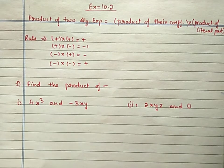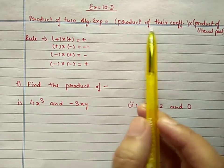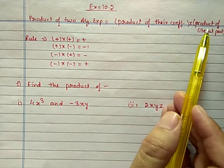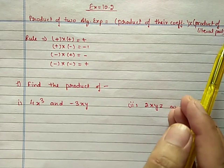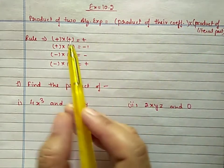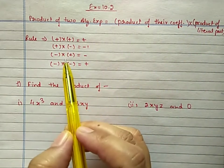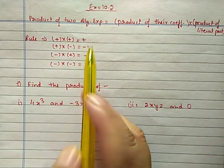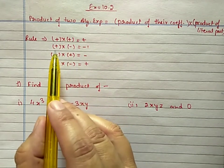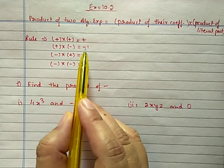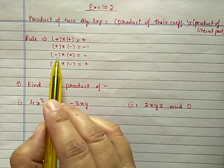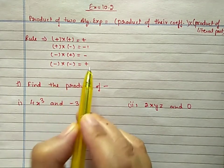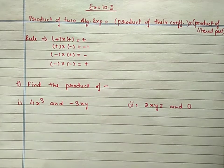When we are talking about a monomial, it's very simple. You have to multiply number to number and variable part to variable part. You have to follow these rules for the sign: when you are multiplying plus by plus it will become plus; plus by minus will become minus; minus by plus will become minus; and minus by minus will become plus.